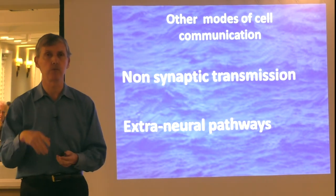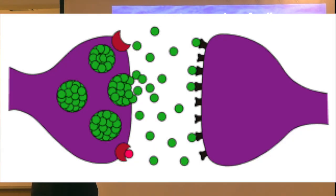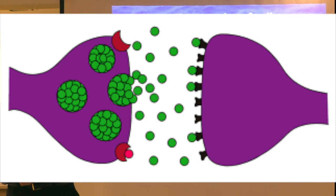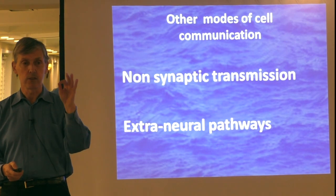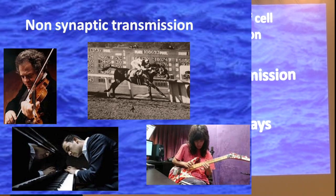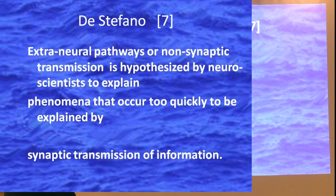Synaptic transmission involves a nerve impulse going to a synapse, crossing over, going to the next one, crossing over, going to the next one — and all that takes time. There are some levels of physical activity that not only humans but mammals can do that cannot really be explained by synaptic transmission. Carl DiStefano is the master of describing this. This is note number seven.